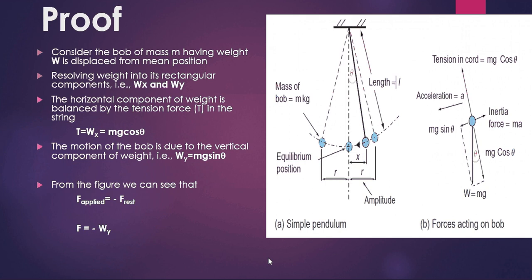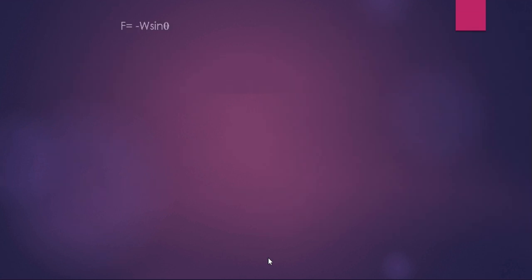From the figure, the applied force equals minus the restoring force. When the force is applied from mean to extreme position and released, the body moves back under gravity. The force which brings the body back to its mean position is called the restoring force. So F = −Wy = −W sinθ. Since W = mg, therefore F = −mg sinθ.